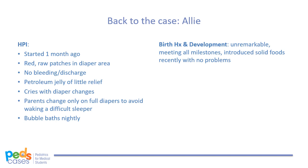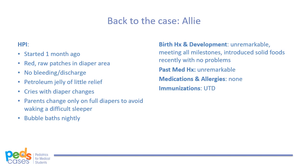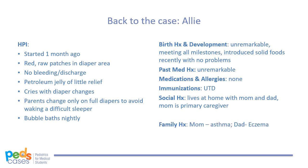Allie was born at term after an uncomplicated pregnancy and has been healthy since, tracking on the 75th percentile for weight and height. She has been meeting all of her milestones and is eating appropriately with regular bowel movements and voids. She's on no medications and has no allergies. Her immunizations are up to date. She lives at home with mom and dad; mom is her primary caregiver. They haven't changed anything about her routine besides introducing solid foods, which she has been tolerating well, and they've been using the same brand of diapers and lotions since her birth. In terms of family history, dad has glaucoma. Overall, they haven't noticed any other new signs or symptoms.